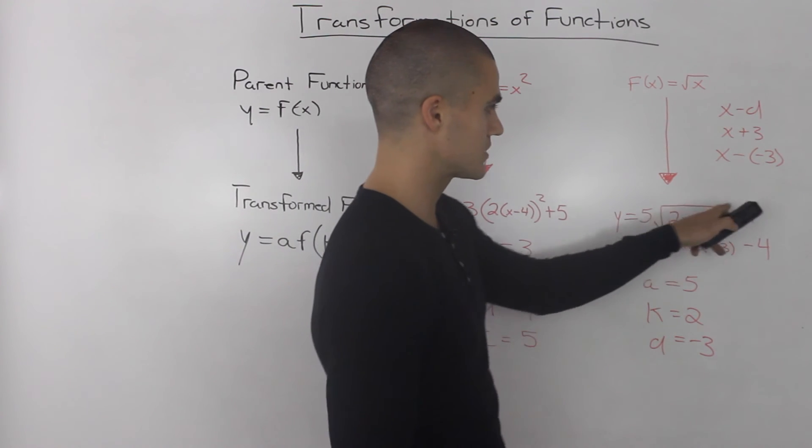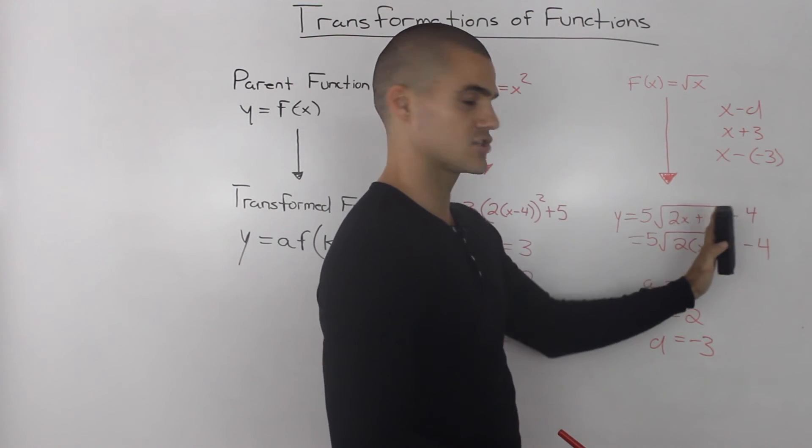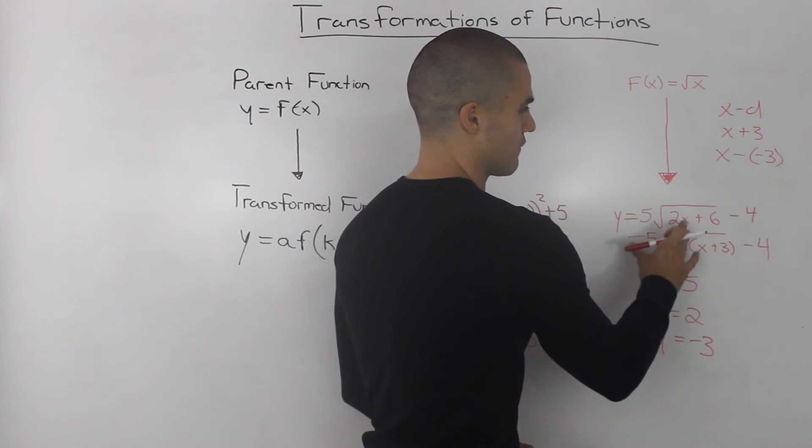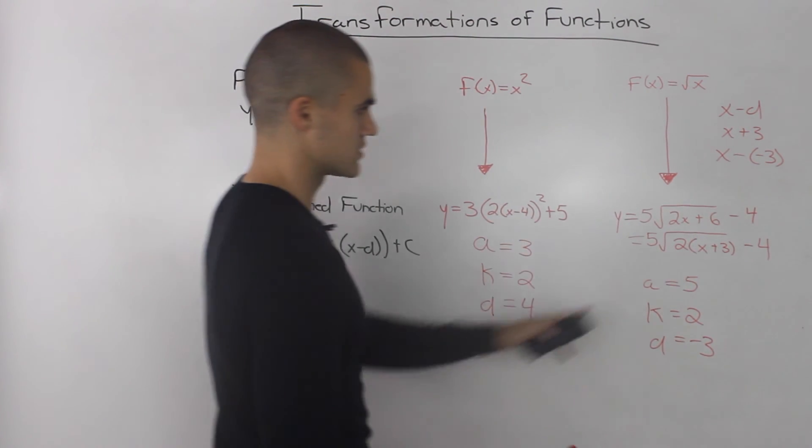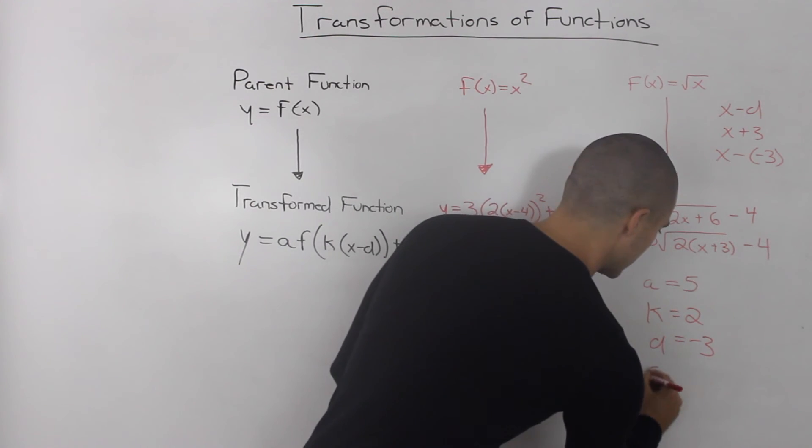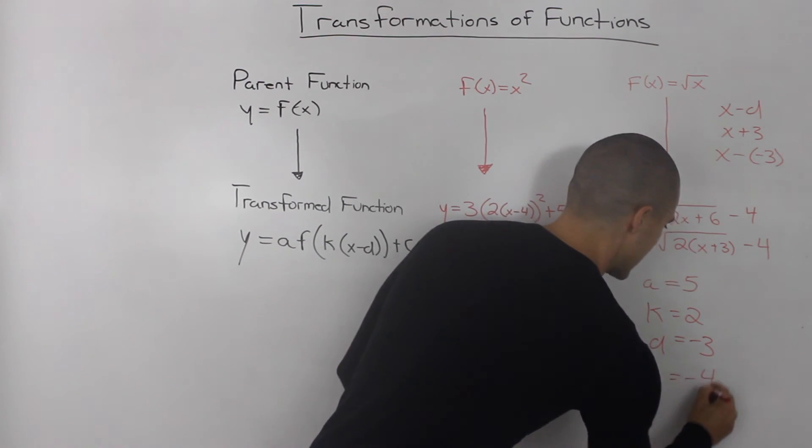And then same thing here, notice how this -4 is just subtracted to it but it's not attached to the f, right? The c value is not attached to the f. So the c value in this case is negative 4.